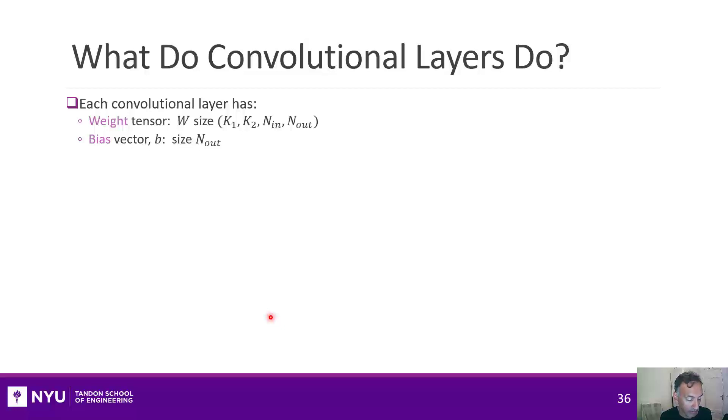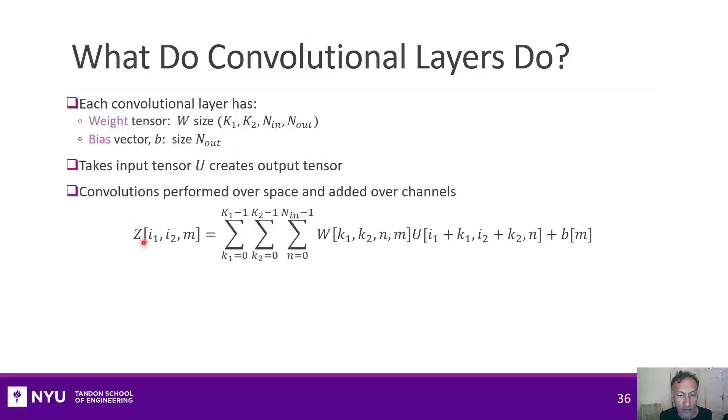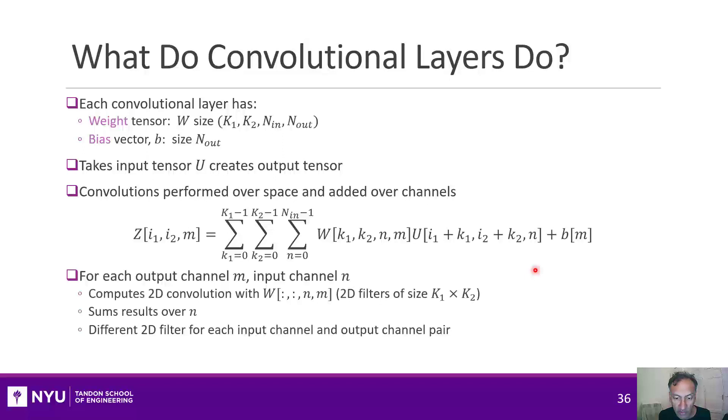So let's walk through carefully what a convolutional layer is. So a convolutional layer is defined by, just like a regular layer, a weight and a bias. But the weight is actually a tensor. And it's a tensor of kernels of size k1 and k2. Those are typically small. And there's a number of input channels and a number of output channels. And then you have a bias vector. Now, what this does is it takes an input u to create some output tensor. And it uses this kind of crazy formula here. This looks really complicated. But it's actually very simple in the following way.